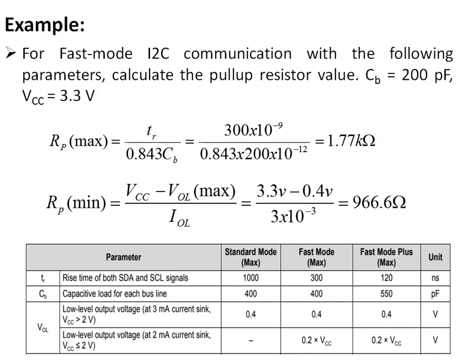The pull-up resistance value should not be above Rp(max) and should not be below Rp(min). If it is more than Rp(max), it will affect the rise time of your pulses. If you connect a resistance value below Rp(min), it will make the pin always remain high and will not allow the pin to go low.